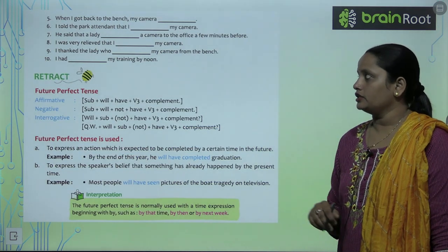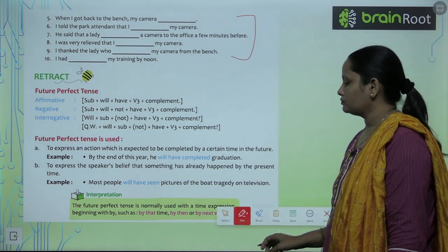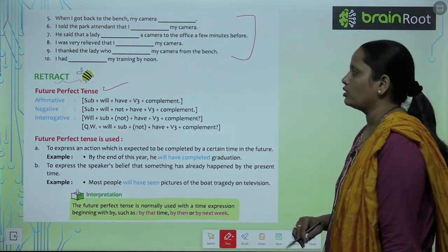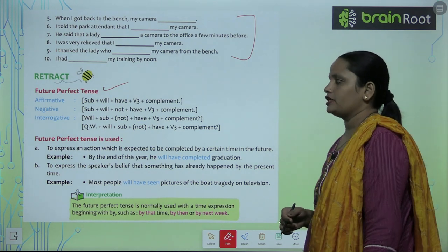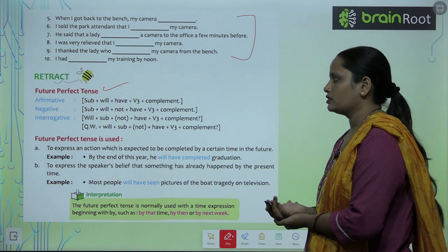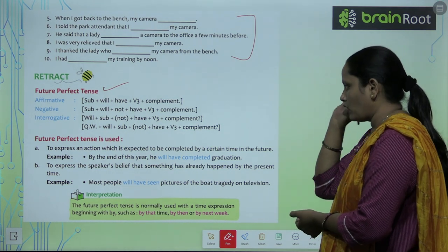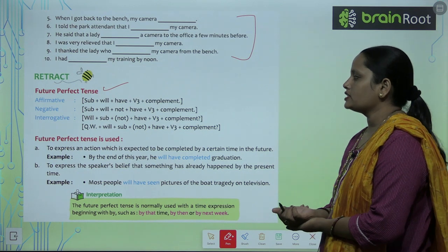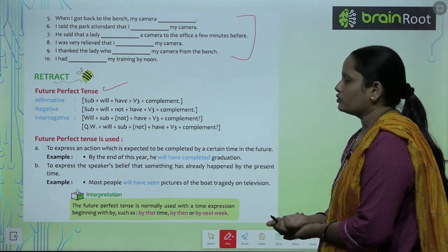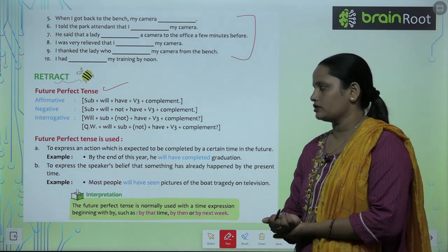Now children, complete questions 5 to 10 on your own. Let's learn what is future perfect tense and what rules we should follow. Future perfect tense is divided into three parts: affirmative, negative, and interrogative. Affirmative: subject plus will plus have plus verb's third form and complement. Negative: subject plus will plus not plus have plus verb's third form and complement. Interrogative: will plus subject plus not plus have plus verb's third form and complement. Also: question word plus will plus subject plus not plus have plus verb's third form and complement.